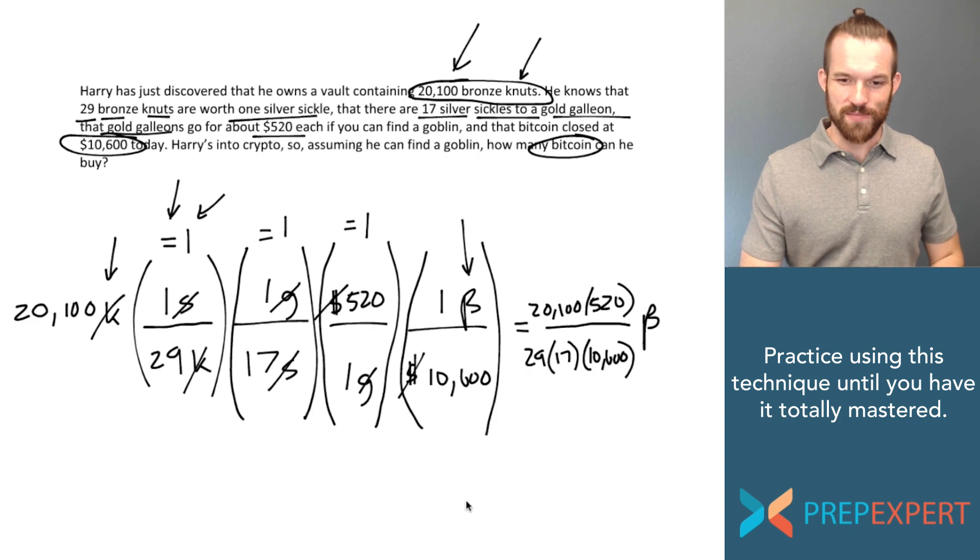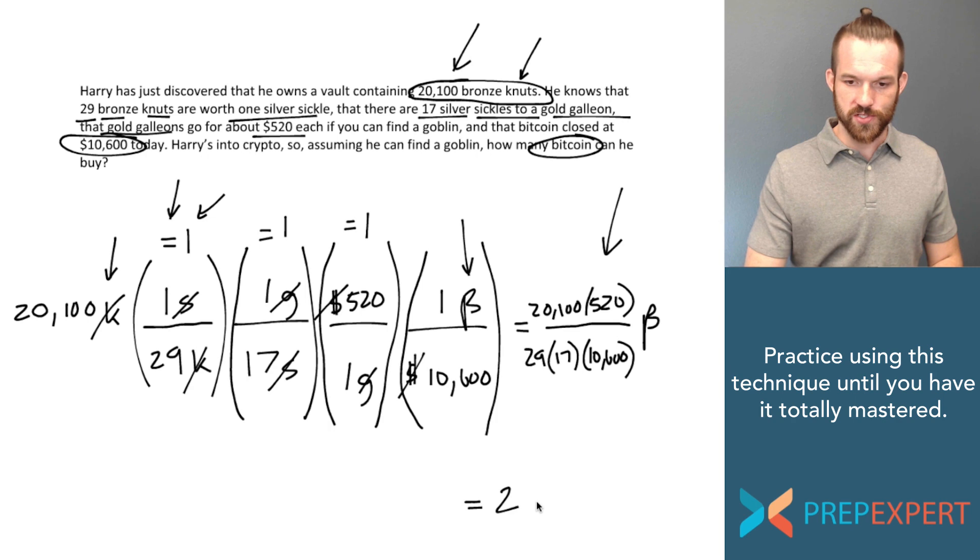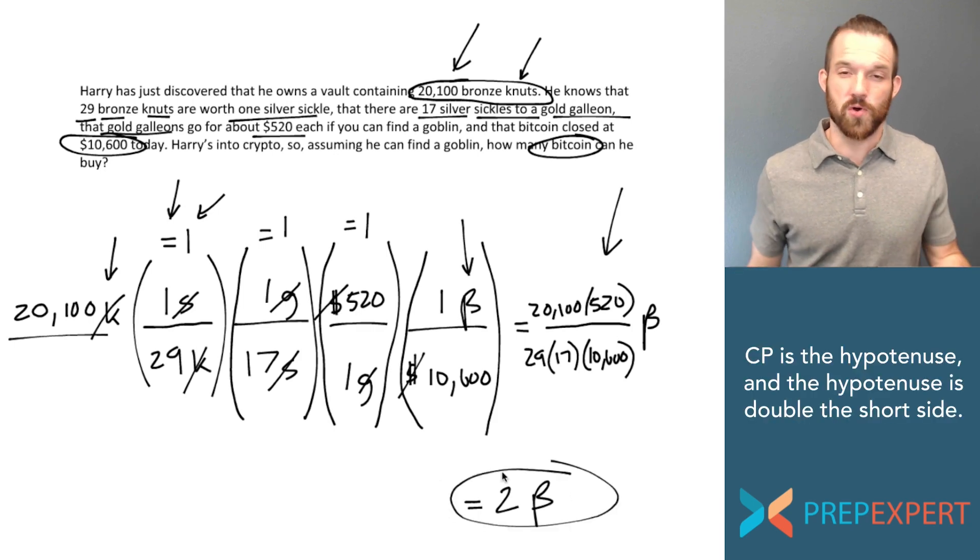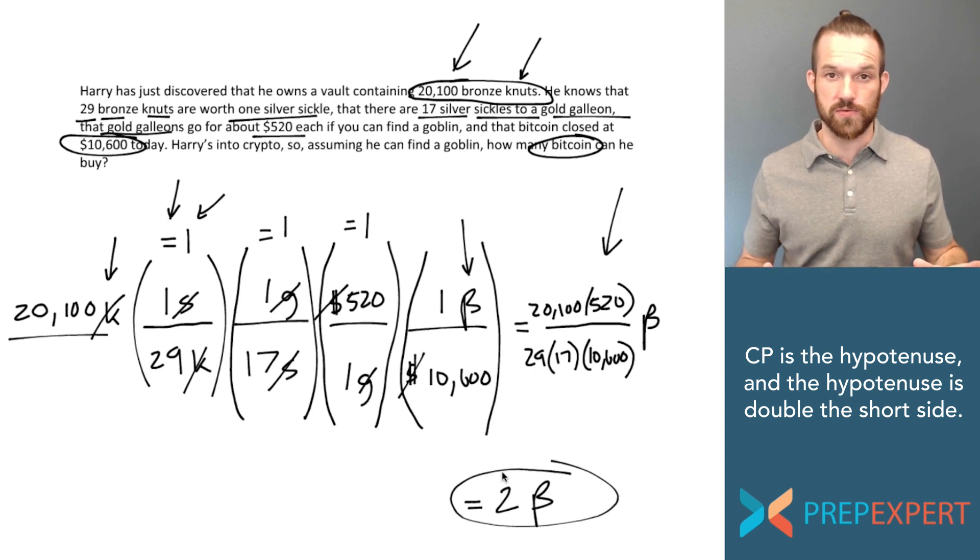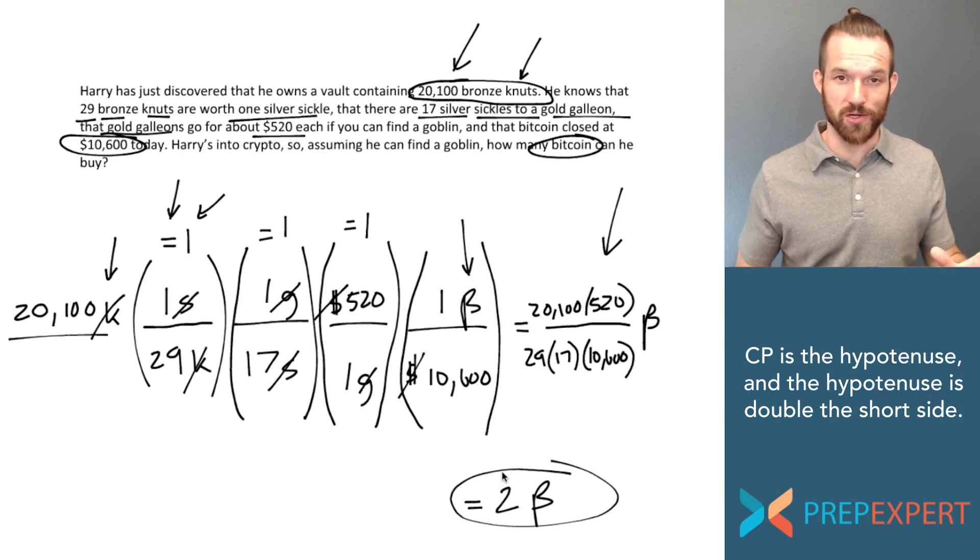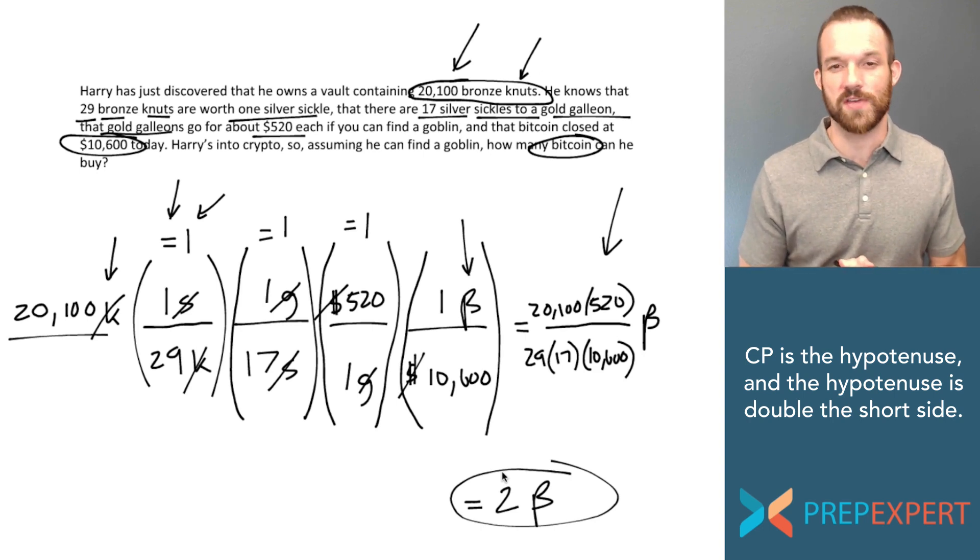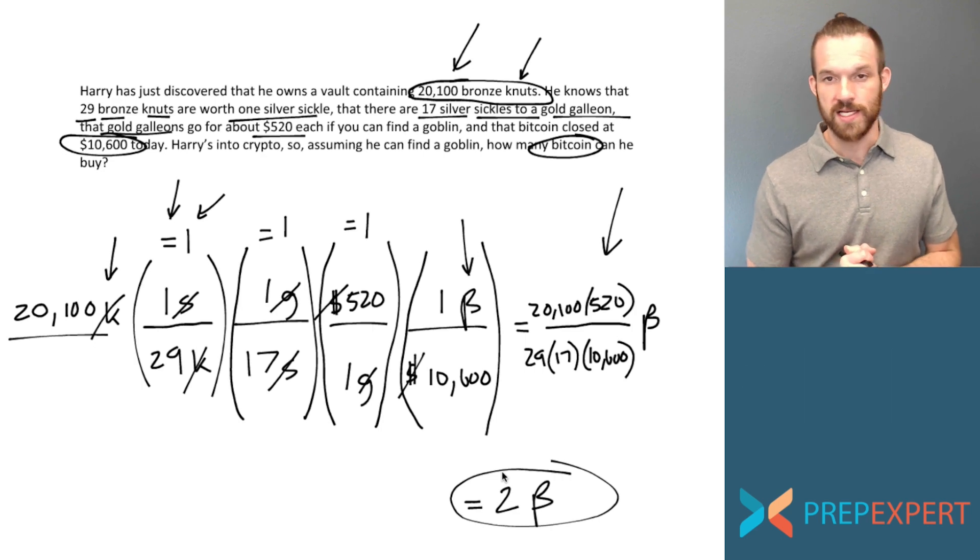And so now let's worry about the math. If you calculate this out what you'll find is that it comes out to right about 2 Bitcoin. So it looks like Harry's 20,100 bronze nuts are worth approximately 2 Bitcoin. If this were on the real SAT or ACT they'd give you precise instructions about how to round your answer. So this is how you use the universal bulletproof failsafe can't mess it up unit conversion method. I can't encourage you highly enough to master this before your test day.